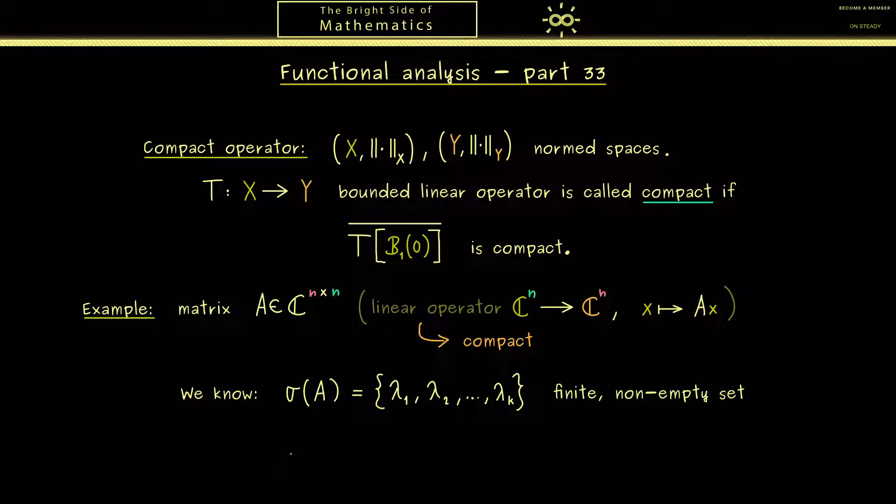Moreover, we know we can also look at the eigenspaces, which is given by the kernel of A minus lambda_j times the identity. In short, as always we just write A minus lambda_j. Of course, here all the eigenspaces are finite dimensional spaces by definition. But in general, for bounded linear operators in an infinite dimensional space, they could be infinite dimensional as well. However, maybe it still holds that the eigenspaces are finite dimensional for compact operators, because they are very close to matrices.